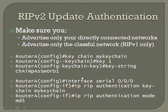Get into regular config mode and enter the interface you're setting up RIP authentication on — in this case, serial 0/0/0. Then from interface configuration mode, the command is 'ip rip authentication key-chain' followed by the name of your keychain, which in this case we named 'my-keychain'.